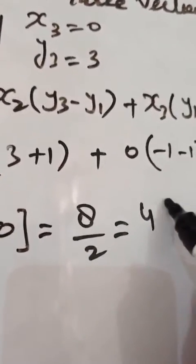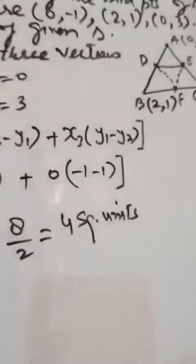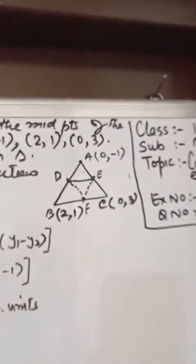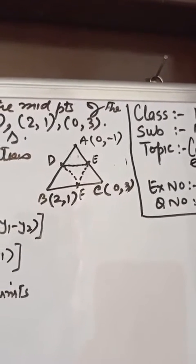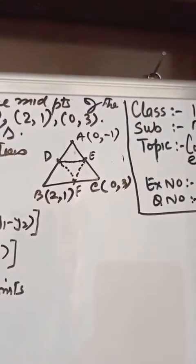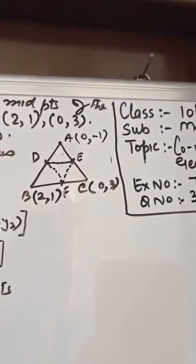Area equals 4 square units. So this triangle ABC has area 4. Now we need to find the coordinates of D, E, and F.